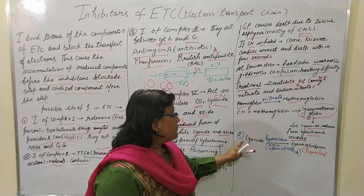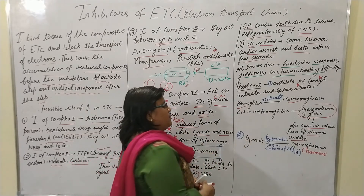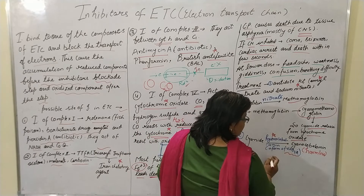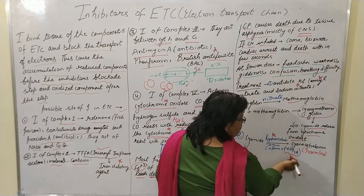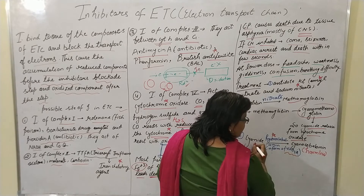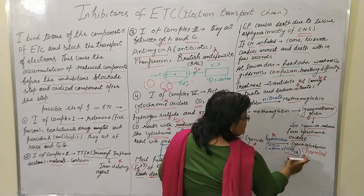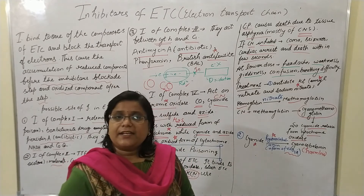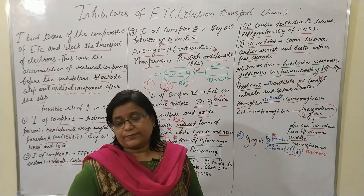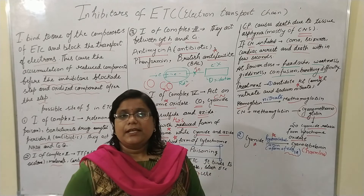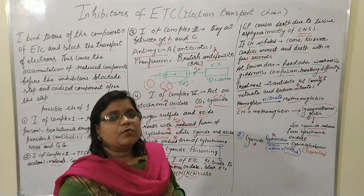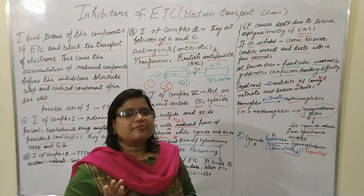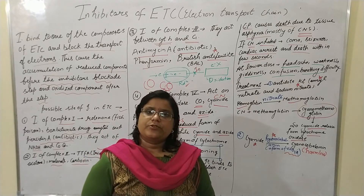The second treatment is hydroxocobalamin, which is a form of vitamin B12. It converts cyanide into cyanocobalamin. Cyanocobalamin is harmless, whereas cyanide is highly toxic. Once the cyanide combines with hydroxocobalamin to form cyanocobalamin, the cytochrome oxidase is free to resume its role in the electron transport chain.